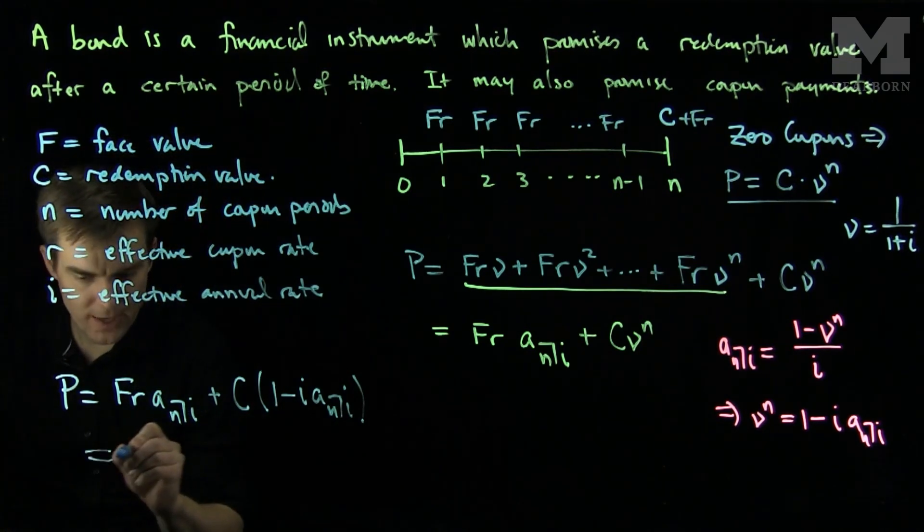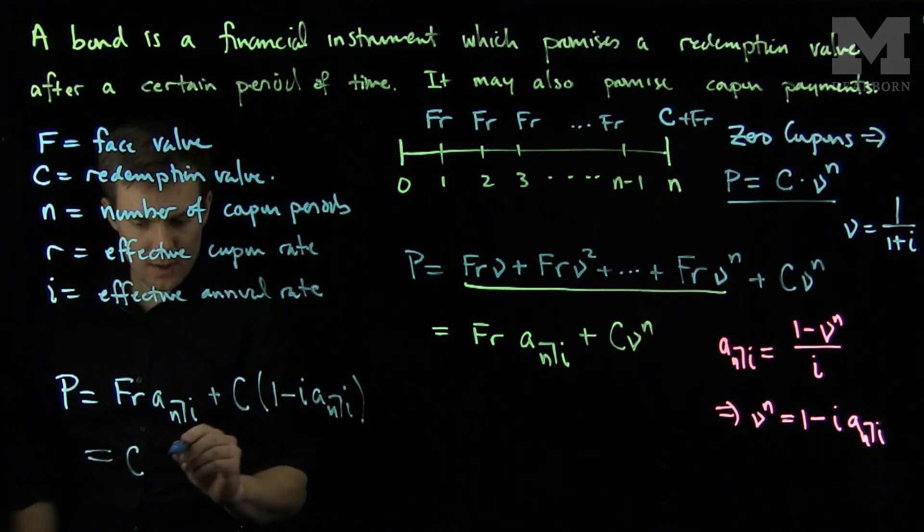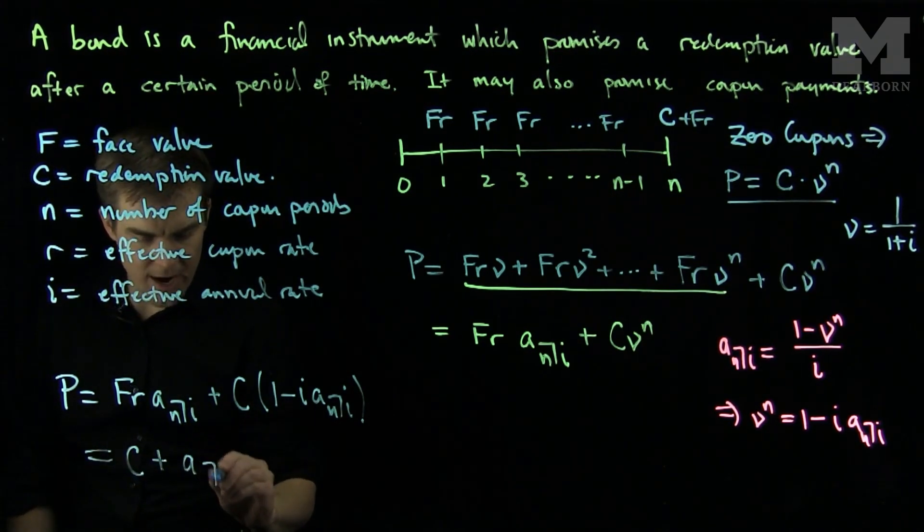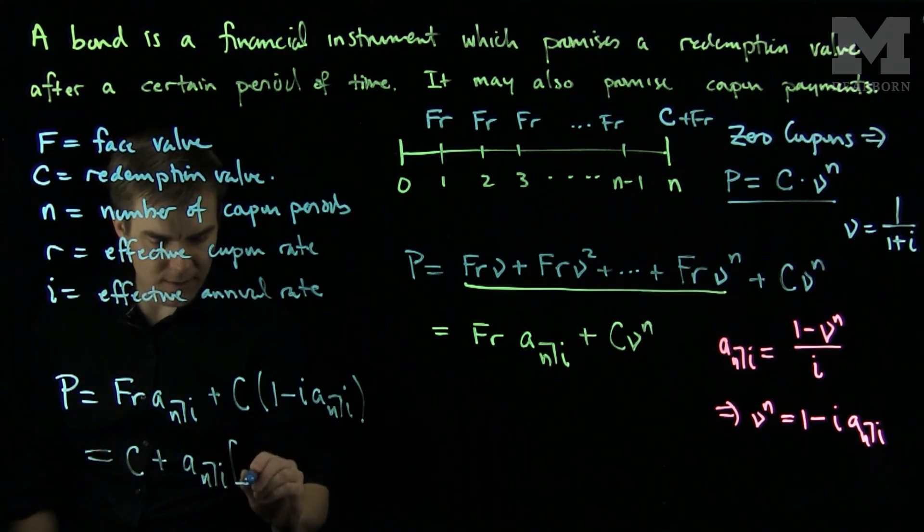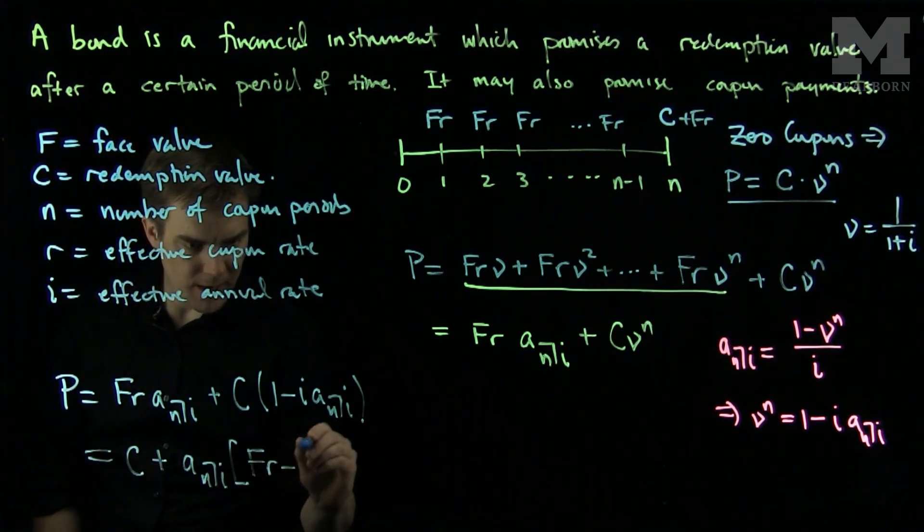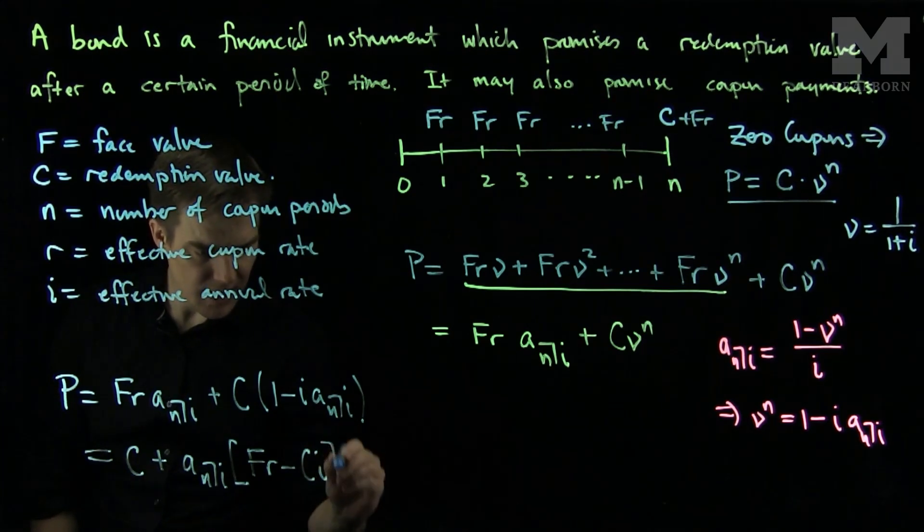And we see that the price of a bond will be C plus a angle N at I times (FR minus CI). So this is how we price bonds with coupons.